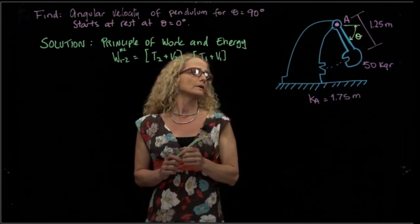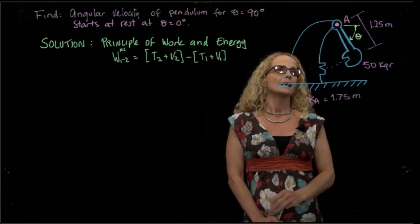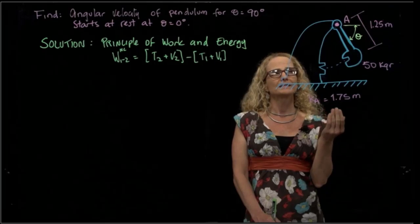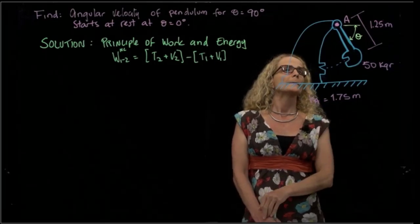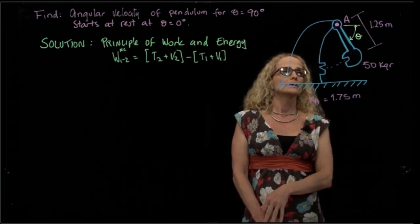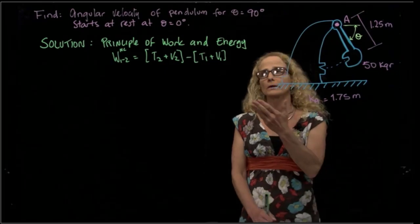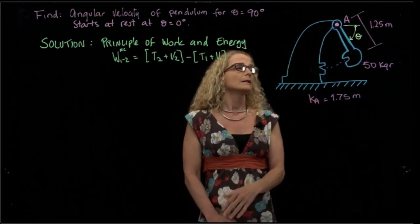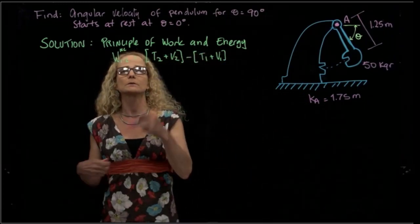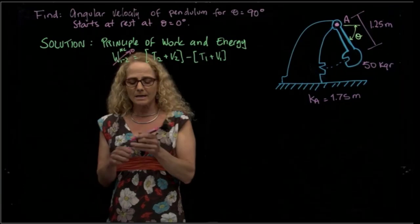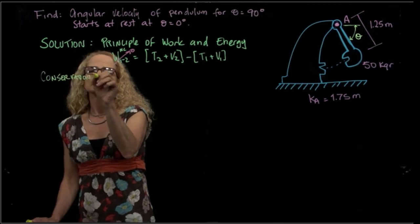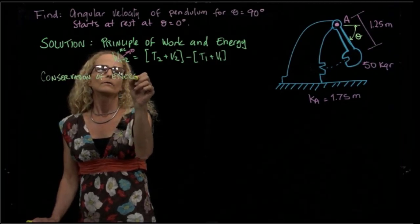What forces do we have here involved? We have two forces at A, which are the reaction forces at that pin, but we do not have any displacements of that point, so those forces do not work. We have the weight of our pendulum, but the weight can be considered a conservative force, so I will calculate it as a potential. And then we do not have any non-conservative forces, so we can say that the work done by non-conservative forces is equal to zero.